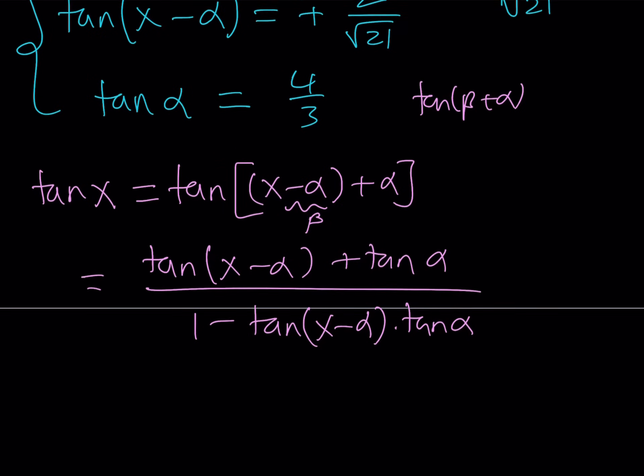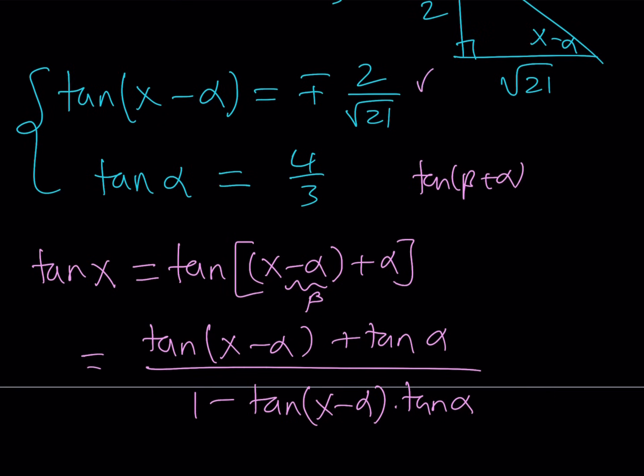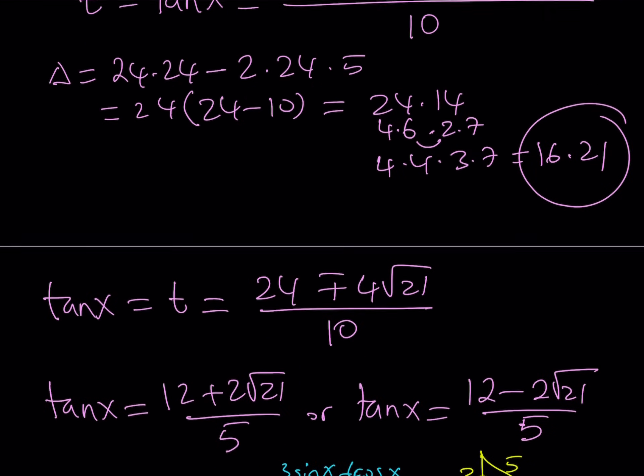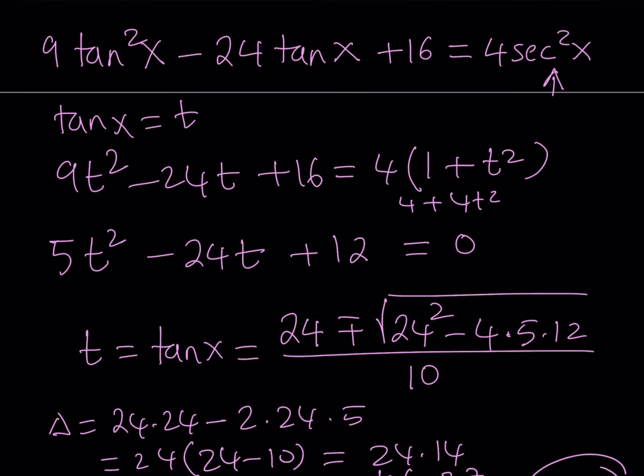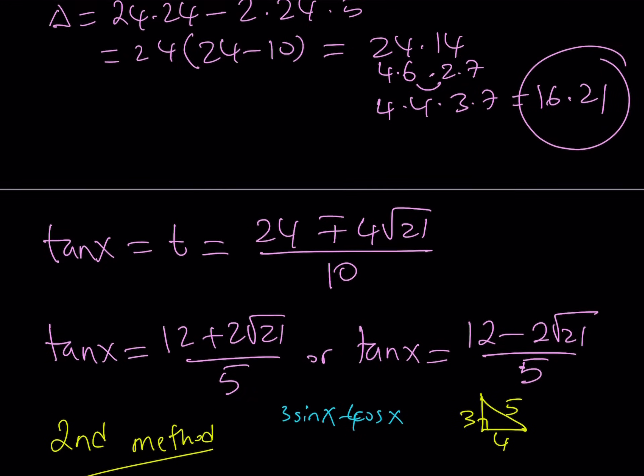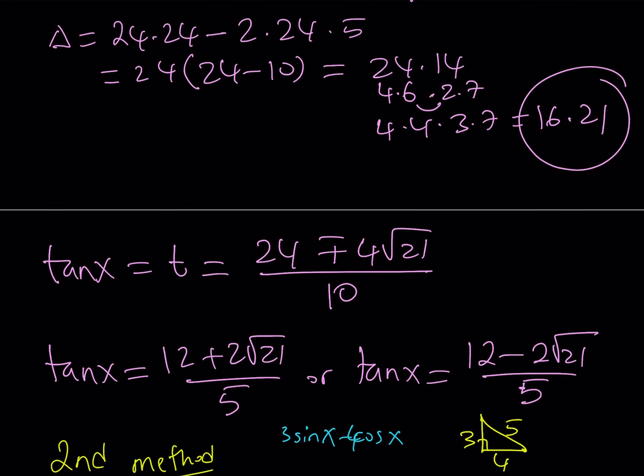Now, since we have two different values for tangent x minus alpha, we're going to plug it in and find the two different values. I'm going to leave it as an exercise for the reader. I hope you don't mind. In the interest of time, I don't want to keep this video too long. And it's very easy to do. You can just plug it in. And guess what? You're going to be getting the same values that we have received before. And these are the two tangent x values that we're going to be getting for this equation.